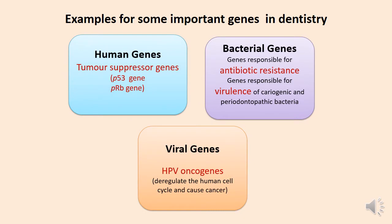Some of the genes which you have to frequently discuss during your BDS program are shown here. Among the human genes, the tumor suppressor genes p53 and p-retinoblastoma will be important for you because their mutations are associated with oral cancer. The antibiotic resistant genes are also important because these genes confer antibiotic resistance to bacteria, and because of that you will have problems in controlling bacterial infections in your patients.